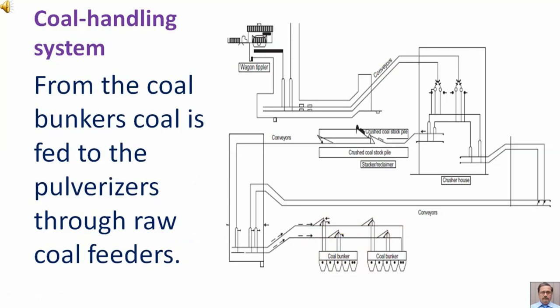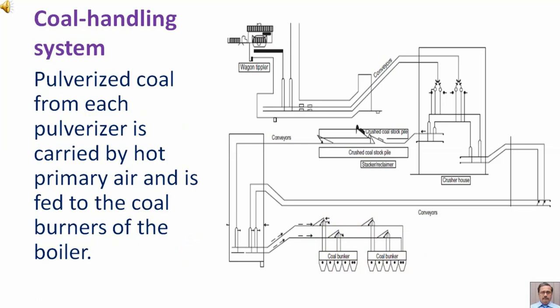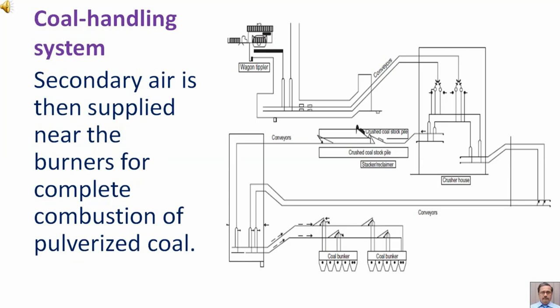From the coal bunkers, coal is fed to the pulverizers through raw coal feeders. Pulverized coal from each pulverizer is carried by hot primary air and is fed to the coal burners of the boiler. Secondary air is then supplied near the burners for complete combustion of pulverized coal fuel.